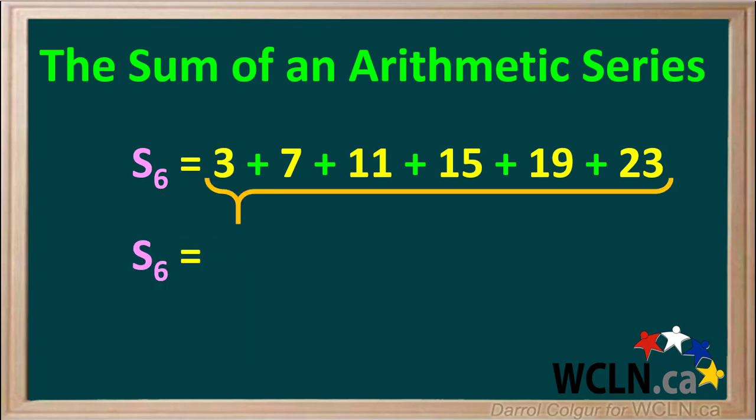For a simple arithmetic series like this one, we can simply add up all the terms. Adding 3 plus 7 plus 11 plus 15 plus 19 plus 23 gives us a total of 78. So the sum of this arithmetic series is 78.